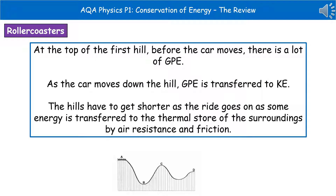The next thing we need to do is actually apply our knowledge to real life scenarios. The first one of these is the good old example of a roller coaster. If you look at the diagram at the bottom, we've got four points labelled A, B, C and D. At point A, the very beginning, we're at the top of our very first hill.